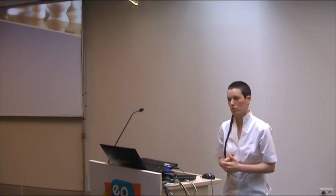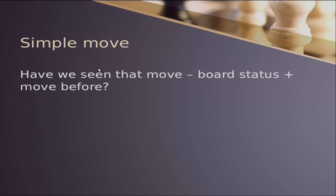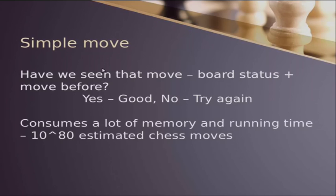So the first thing we wanted to do, the first question we addressed: can we do a simple move? The most naive thing would be, have we seen that move before? By saying this move, I mean the board status and the move I want to do. If so, yes, good, do it. If not, try again. Maybe there's not enough data so I haven't seen this move, or maybe it's not legal and therefore I haven't seen it. It's not efficient on neither running time or memory, and of course there is no learning done here.